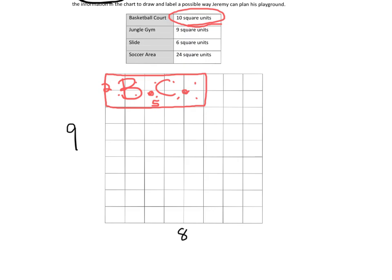And let's do the jungle gym, and we'll do the jungle gym in green. Got to do it in green. And it's 9 square units. So I'll put it way down here. Here's where I'll put the jungle gym and get it far away from the basketball court. And so I'll call that the jungle gym.